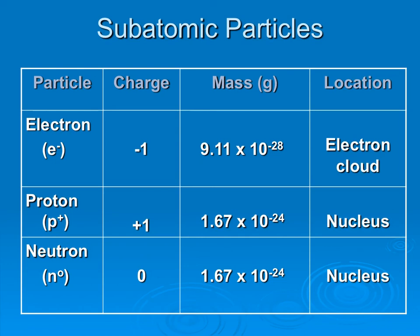This is just a little review of subatomic particles — hopefully you remember a little bit from biology or physical science. The mass in grams — we usually use zero for electrons. Then one amu and one amu for protons and neutrons. We'll talk much more about mass later on.